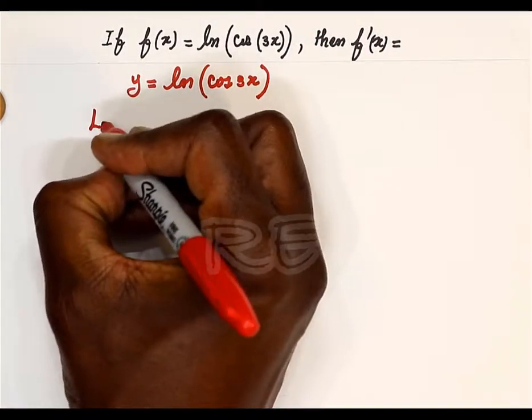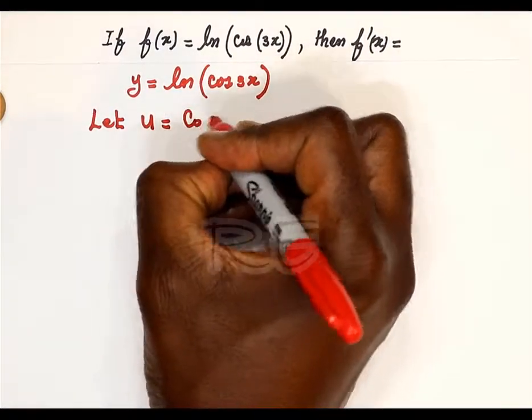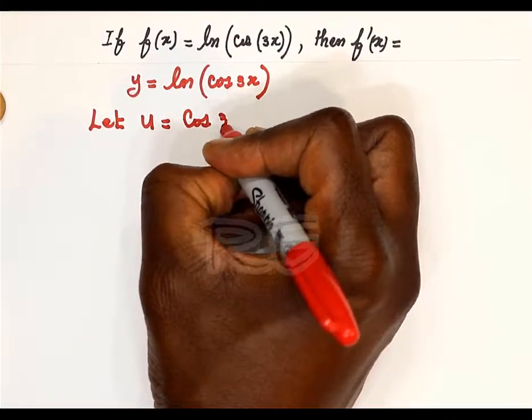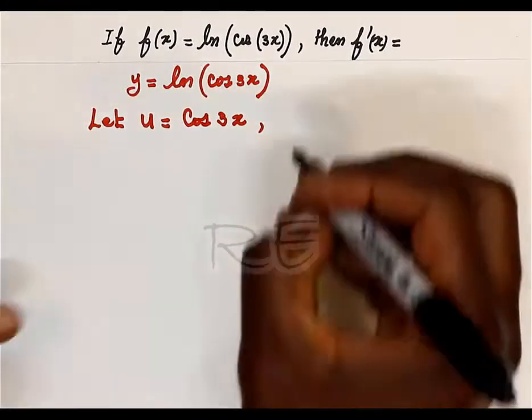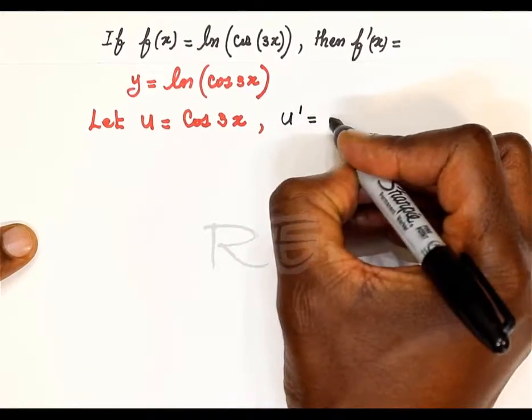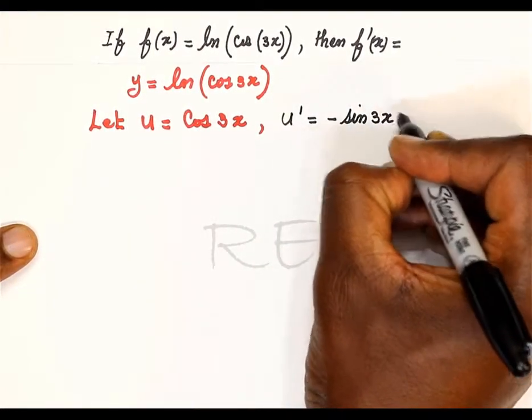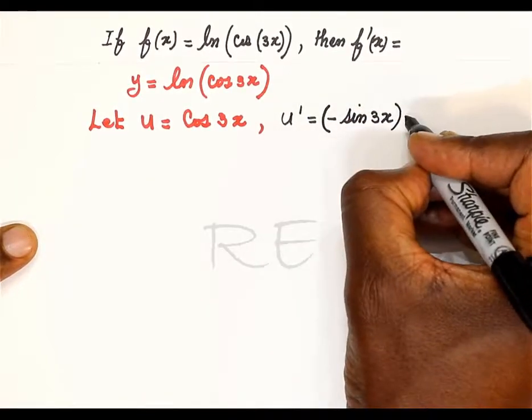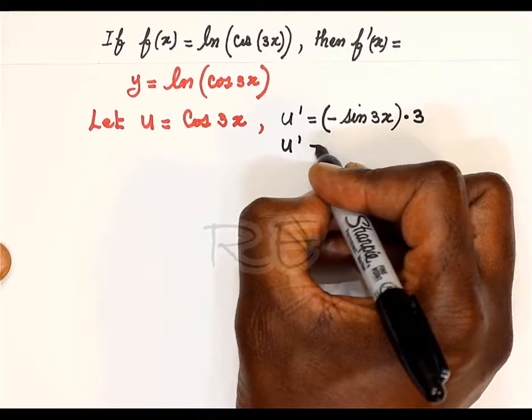We're going to let u equal cosine 3x. This is a composite function. u prime, its derivative, is equal to negative sine 3x multiplied by 3, which is the derivative of 3x.